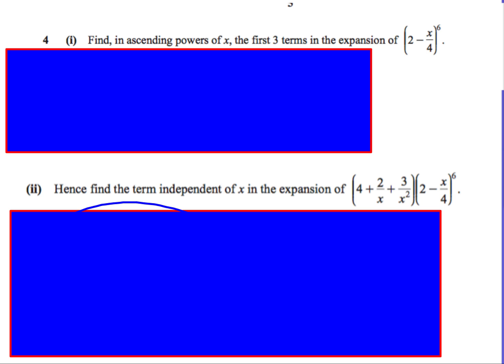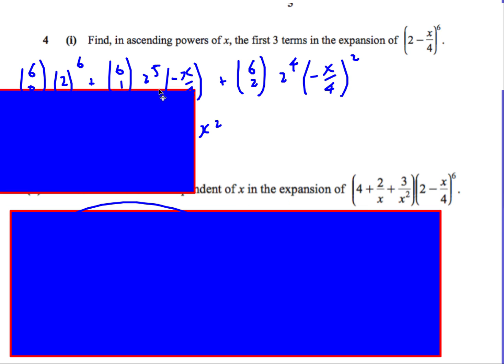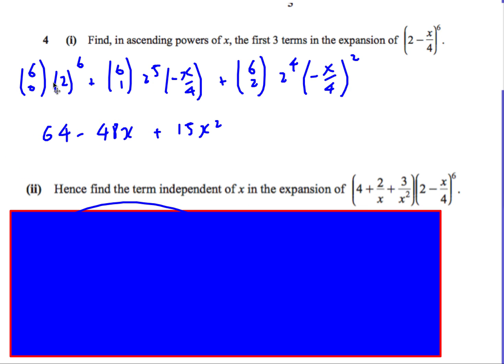Okay, just the last question. Let's have a look at this one. In ascending powers of x, just read the question carefully, ascending powers, so we're starting with a constant term, then it's going to be x to the power 1, x to the power 2. Make sure you read the question carefully. So here we go. 6 choose 0, 2 to the power 6. That's just the constant term. 6 choose 1, 2 to the 5, minus x over 4 to the 1, 6 choose 2, 2 to the 4, minus x over 2 squared. Be careful with your negatives. Make sure you're in brackets. Expand it out. And I'm going to get 64 minus 48x plus 15x squared.